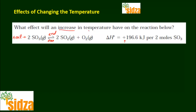Now, increasing temperature always favors the endothermic step. When you increase the temperature, the equilibrium will try to utilize that high temperature by absorbing that heat, which is possible only when the forward reaction is favored. This means the heat is absorbed by SO₃ and it converts into SO₂ and O₂. Therefore, increasing temperature will shift this reversible system toward the product side, producing more SO₂ and O₂.